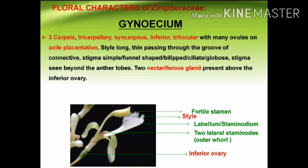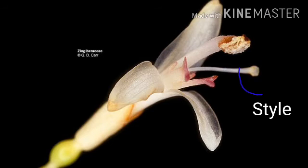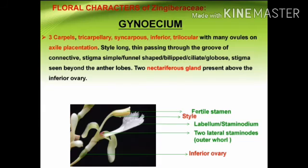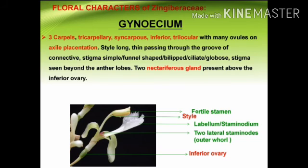The gynoecium consists of three carpels — tricarpellary, syncarpous, inferior, trilocular — with many ovules on axile placentation. The style is long and thin; the stigma is cup-shaped, funnel-shaped, or violet-colored, and also ciliate, sometimes globose. Two nectariferous discs are present above the epigynous ovary. In some genera, especially in Alpinia, the single style passes through the groove of the connective of the fertile stamen, and the stigma projects beyond the anther lobes.